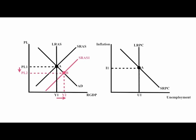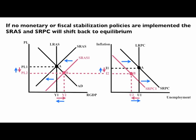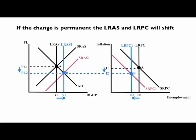When we have an increase in supply, this will bring our price levels down and our GDP up. Inflation and unemployment will go down, moving the short-run Phillips curve to the left. If no monetary or fiscal stabilization policies are implemented, the short-run aggregate supply and short-run Phillips curve will shift back to equilibrium. If the change is permanent, the long-run aggregate supply and the long-run Phillips curve will shift, making these price levels, GDP, inflation, and unemployment levels permanent.